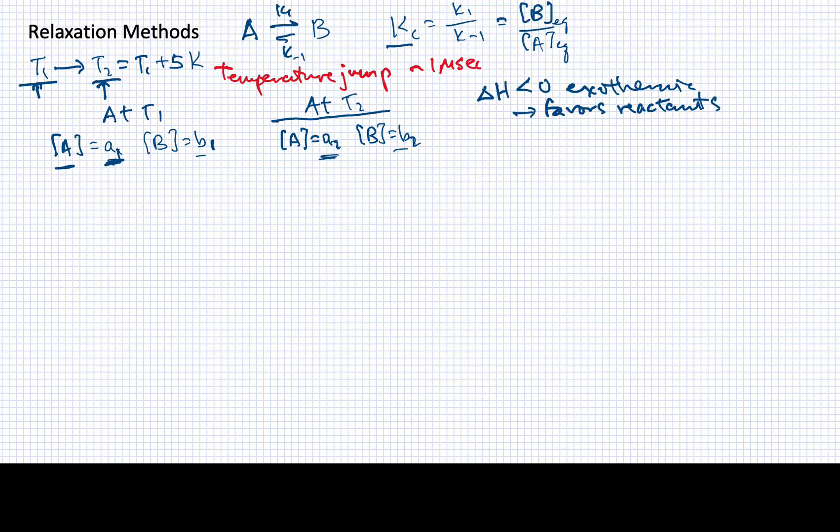So if this is true, that means that A2, the reactant concentration in temperature 2, is going to be greater than the reactant concentration at equilibrium in T1. And the opposite will be true for the B concentrations. So, we can write this: I could say that A1 is equal to A2 minus X, and I could say that B1 is equal to B2 plus X, where X is the amount that's going to change once we make this temperature jump in the reaction.